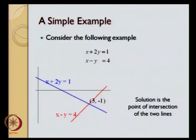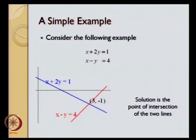We have one equation x plus 2y equal to 1, that represents the blue line over here, and we have another equation x minus y equal to 4, and that represents the red line over here. The point of intersection of these two lines is the point 3 comma minus 1, and that point is the solution of these two equations — the point that satisfies both these equations.